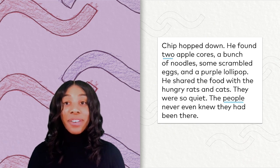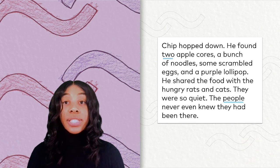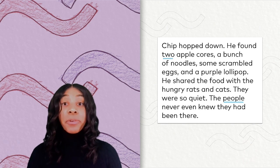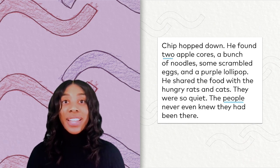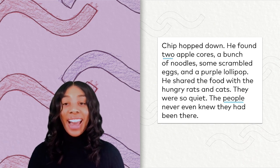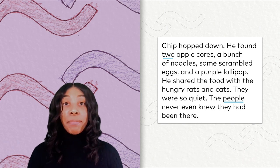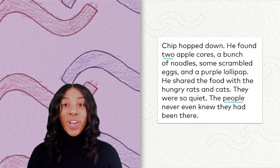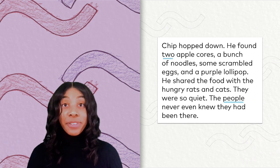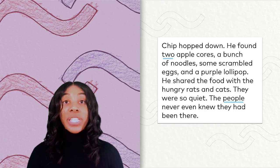Chip hopped down. He found two apple cores, a bunch of noodles, some scrambled eggs, and a purple lollipop. He shared the food with the hungry rats and cats. They were so quiet, the people never even knew they had been there. We only had two high-frequency words on this page: our first one was to and our second one was people.